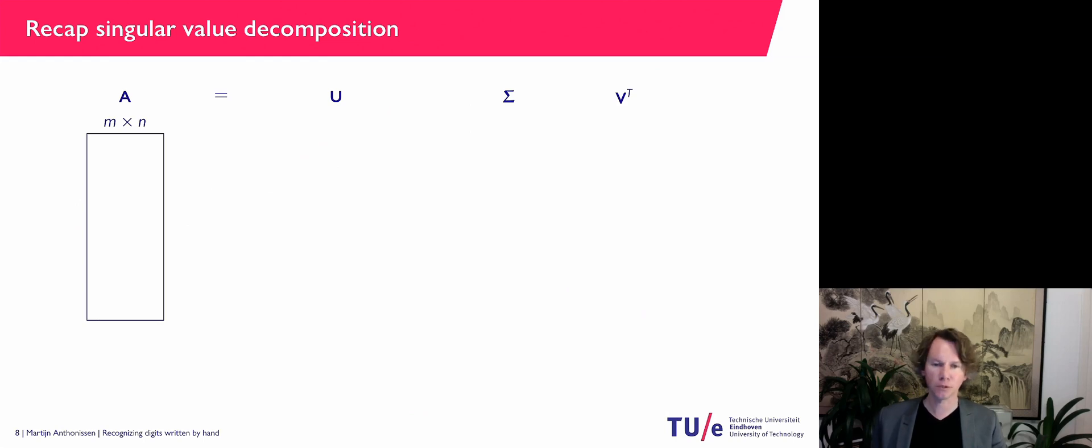So if our A matrix is M times N, so it has a lot more rows than columns, M is bigger than N, then sigma is the same size. And on the diagonal, so the only non-zero entries on the diagonal, are the singular values of the matrix. The singular values, sigma I, if you square them, they are the eigenvalues of A transpose A.